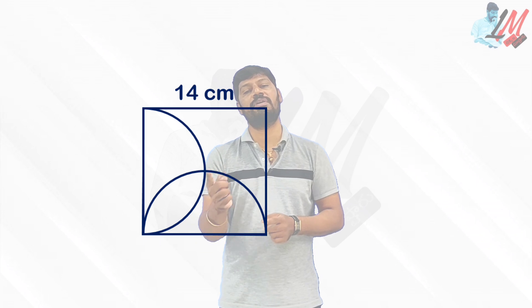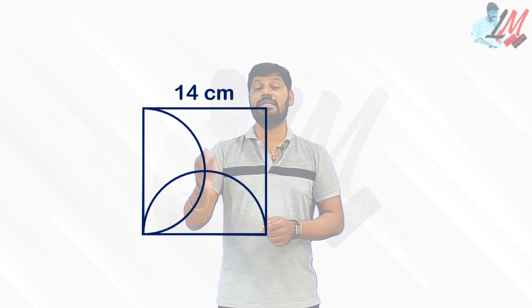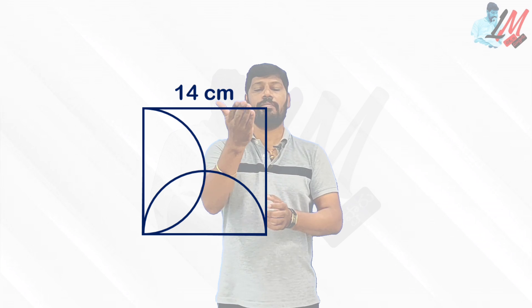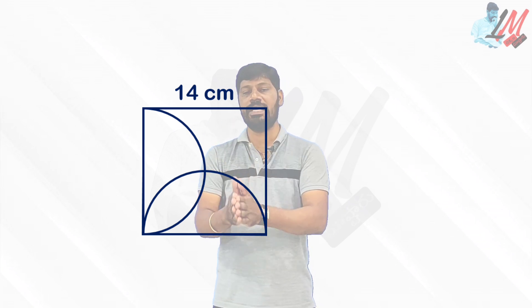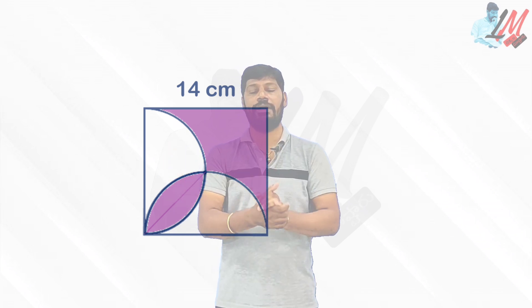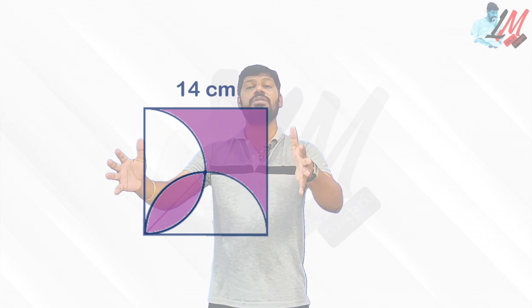Let me explain another question. A square of side 14 centimeters is taken. On one side, one semicircle is drawn, and on the bottom side another semicircle is drawn. There is a common portion between the two semicircles, and also a portion that belongs to the square. These two portions are shaded, and they are asking to calculate the area of this shaded part — only the 14 centimeter measurement is given.